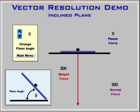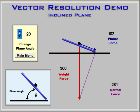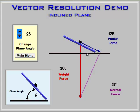For the inclined plane, as we change the angle of the inclined plane, we no longer have a horizontal or vertical — we have a planar and a normal force. The weight, which is always straight down, is broken down into a planar force, which is trying to drag the object down the plane, and a normal force, which is pressing the object against the surface of the plane.